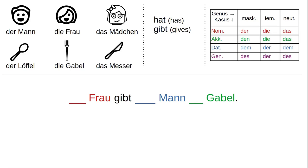Let's try another: 'The woman gives the man the fork.' Woman is the subject, man is the indirect object, and fork is the direct object. Pause the video and fill in the blanks. Die Frau gibt den Mann die Gabel.